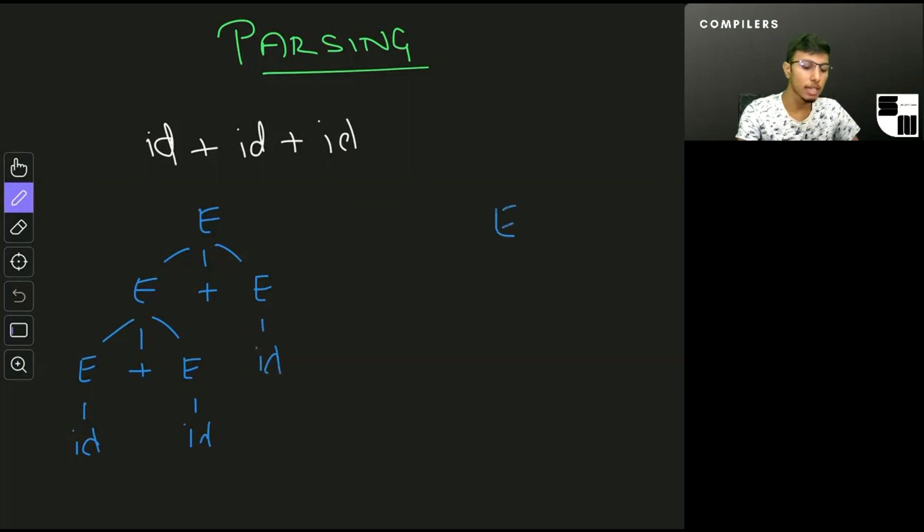The second one that I can have is instead of changing the leftmost E, I use the rightmost E and write the parse tree as follows. Both of these are correct if I just have the grammar which says that E can go to E plus E or an identifier. So what we do is we say that plus is left associative.